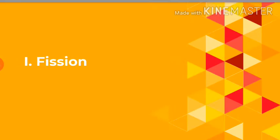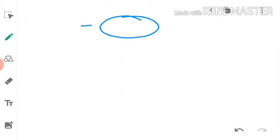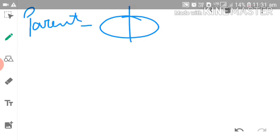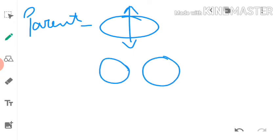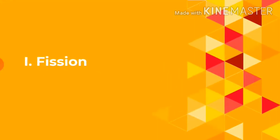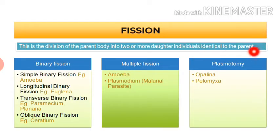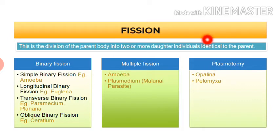In fission, the parent body is divided into two or more parts, which further form daughter individuals. Fission is the division of the parent body into two or more daughter individuals identical to the parent. Fission is further of three types: binary fission, multiple fission, and plasmotomy.